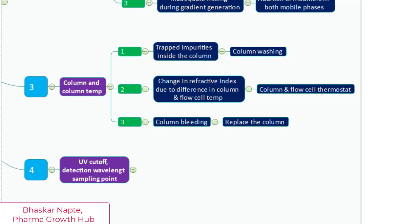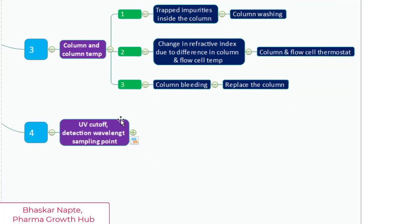to confirm whether your column is bleeding or not, you wash the column with solvent and collect this eluent in a small clean glass beaker and observe whether there are any traces of silica particles in it.